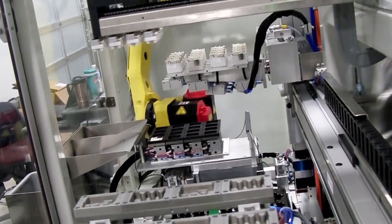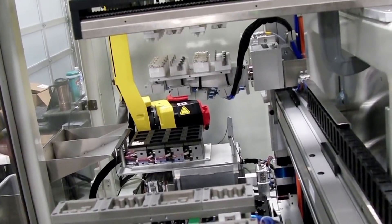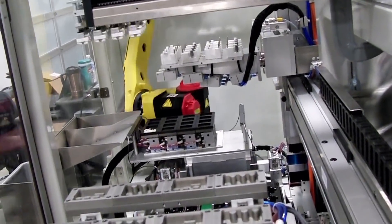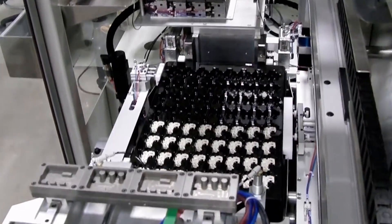The FANUC robot drops parts that failed the earlier inspection process either into a reject bin or a quality control bin.